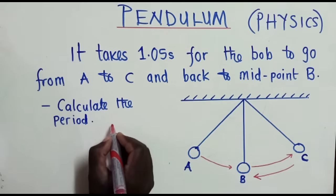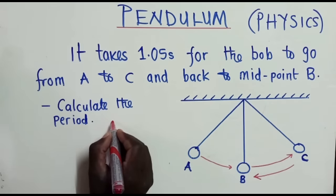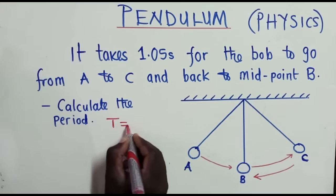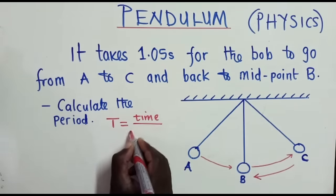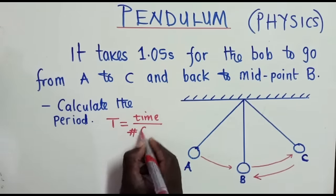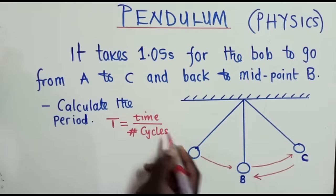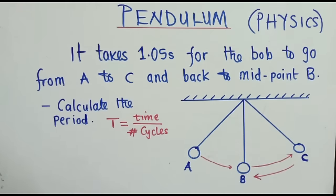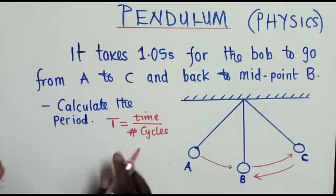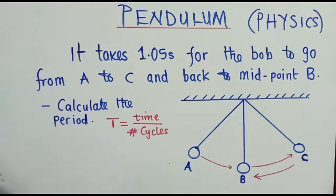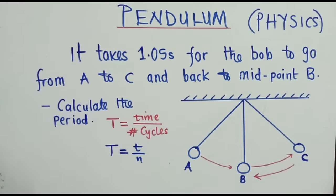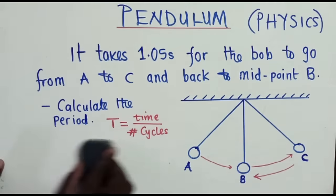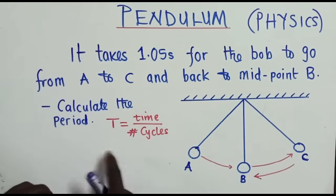The first thing is to write down the formula of finding period, which is T is equal to time over number of cycles. At times, this formula may be written like this: T is equal to small letter t over N. This and this are just the same.